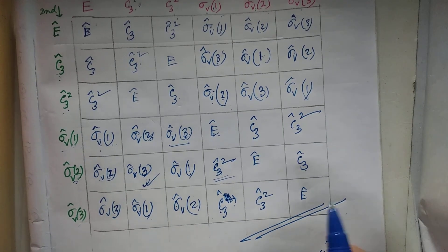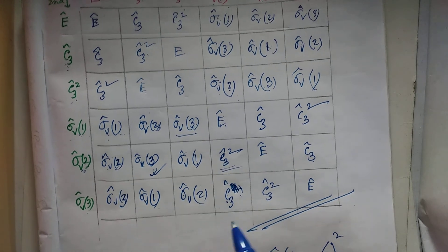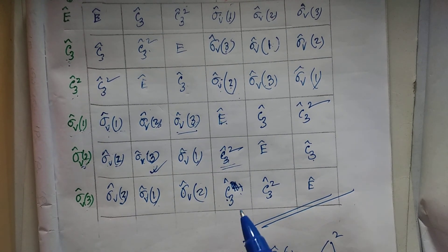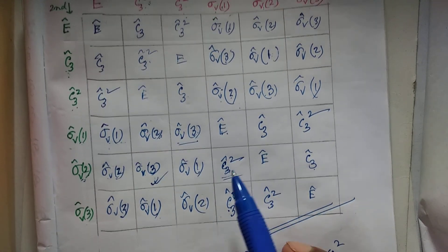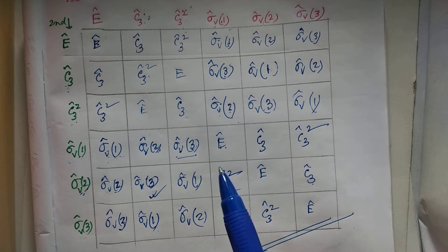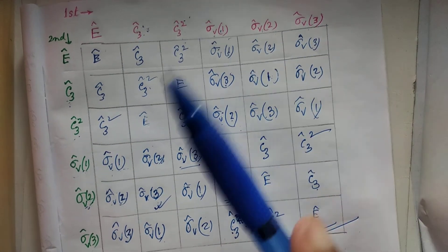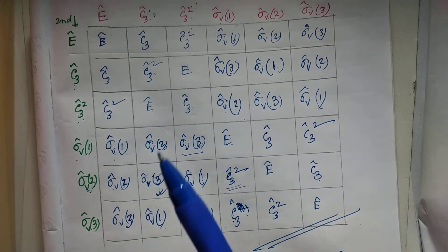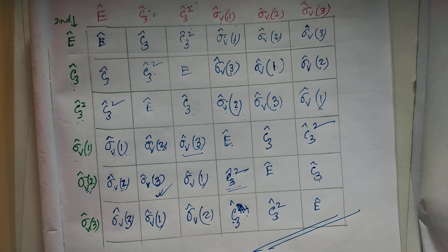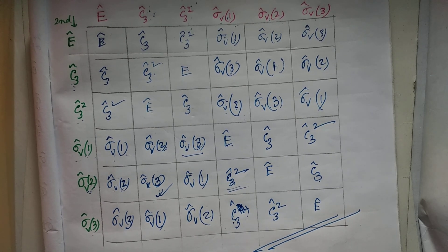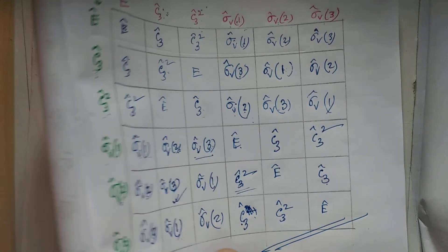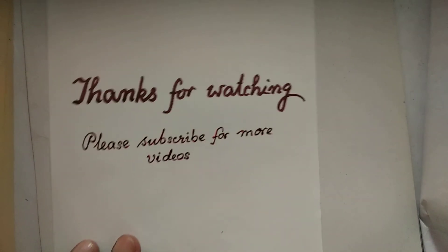In this way, we get the complete multiplication table for the chloroform molecule. The ammonia molecule also has the same set of operations and the same multiplication table. I will discuss the utility of such tables in my next video. Thank you for watching.